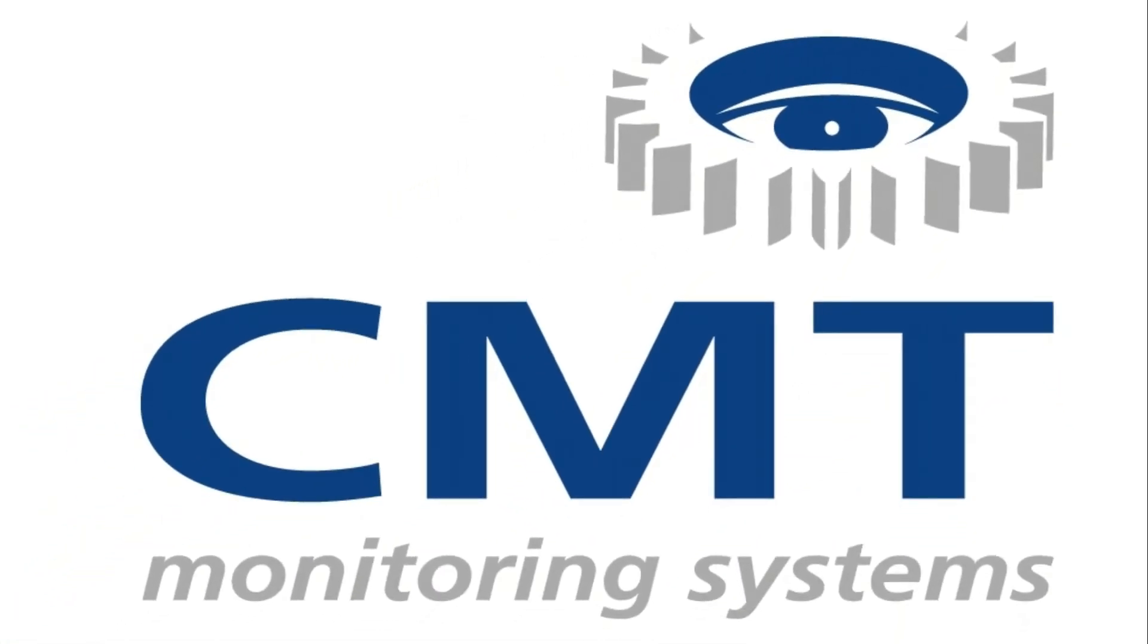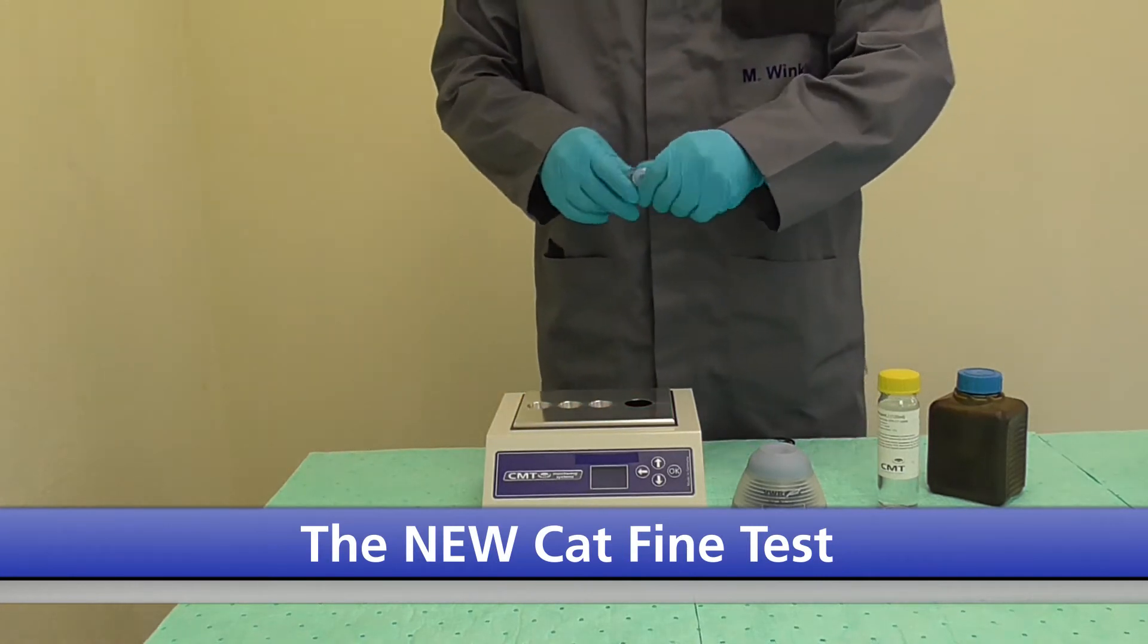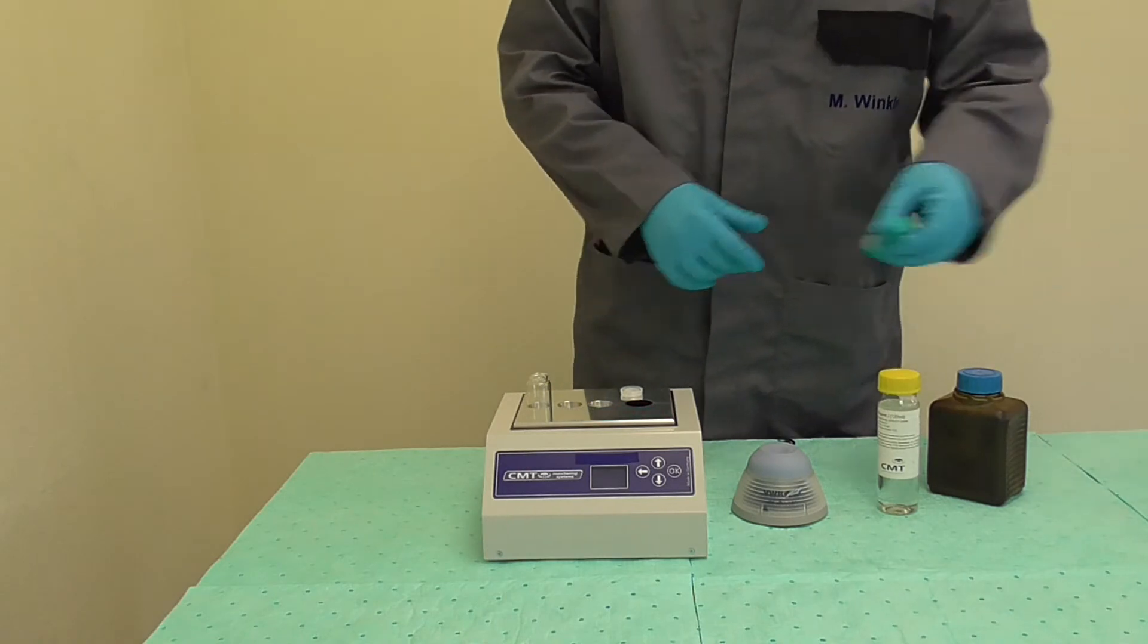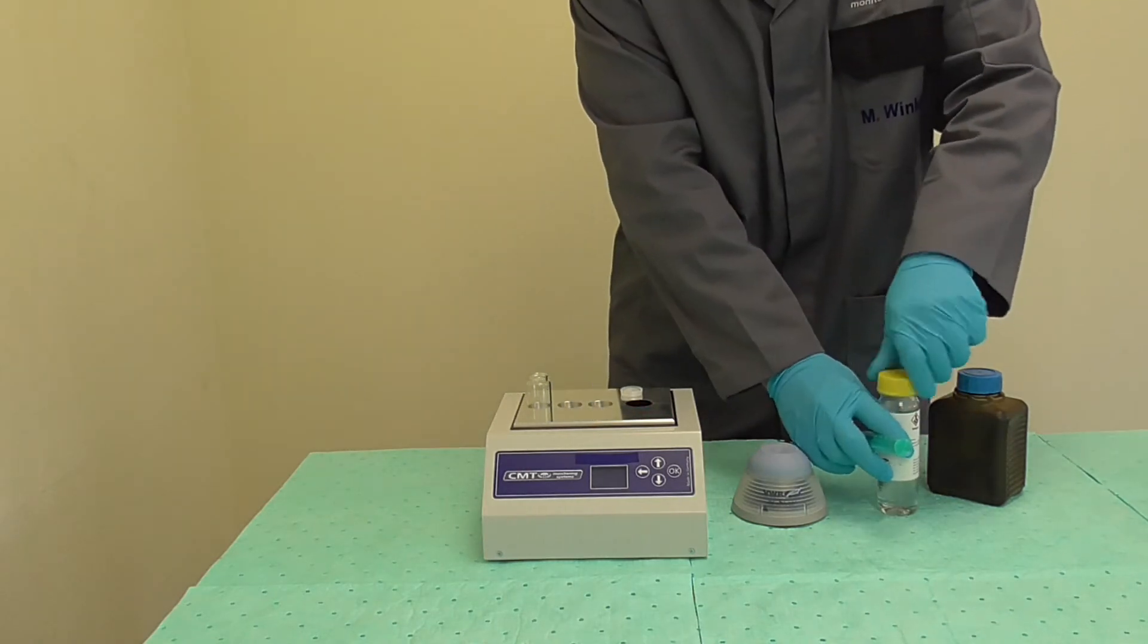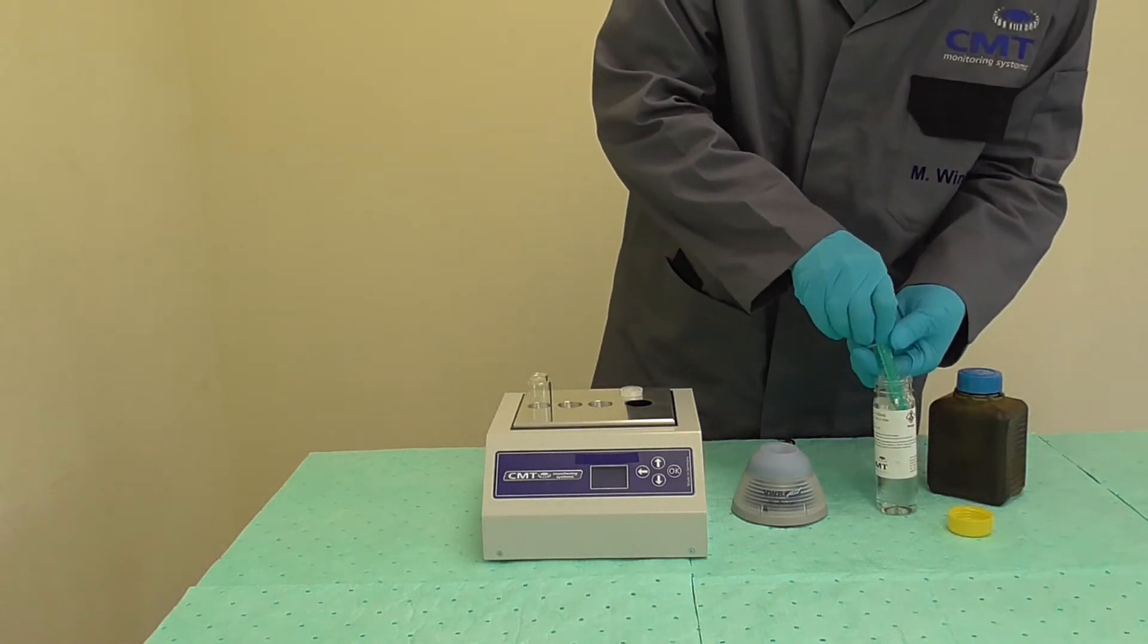This video will explain how to use the new CMT cat fine tester. Take a new clean vial, uncap it, and place it on top of the device in one of the vial holders. Add 9 milliliters of reagent J to the vial using the 10 milliliter syringe provided. You can reuse this syringe in later tests.